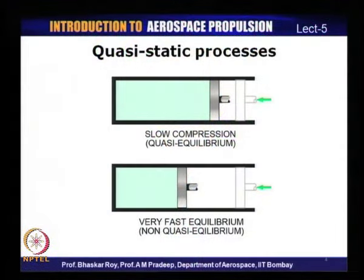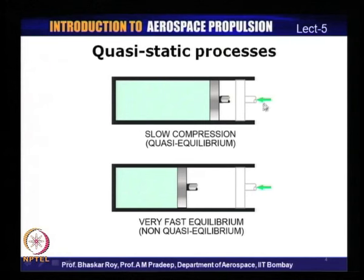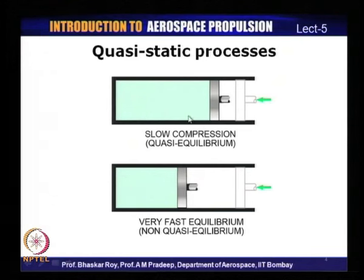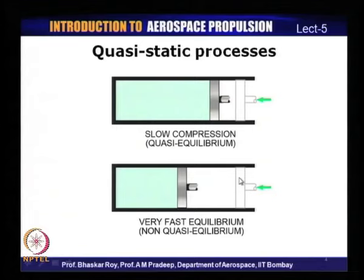Let us look at quasi-static processes in terms of examples. The first example shown is a piston-cylinder assembly. The first picture shows a slow compression process, wherein the piston moves at an infinitesimally slow rate so that the system remains in equilibrium at all times — this qualifies as a quasi-static or quasi-equilibrium process. The second process shows the piston having moved a much greater distance; this does not qualify as a quasi-static process because the system has proceeded at a very fast rate, meaning properties in one part will not be the same as in other parts.